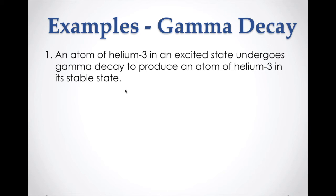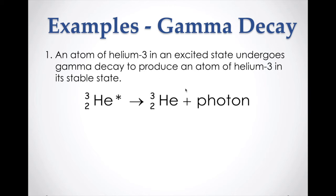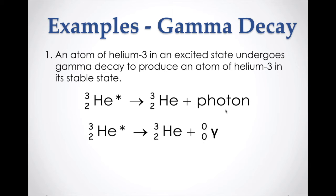Gamma decay equations are almost foolishly simple to write. An atom of helium-3 in an excited state (shown with an asterisk) undergoes gamma decay to produce helium-3 in a stable state plus a photon. The parent — the one with the asterisk — decays to produce the daughter and a photon represented by the gamma symbol with two zeros.